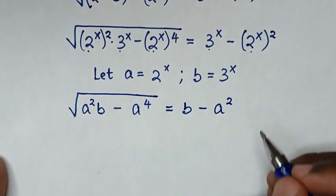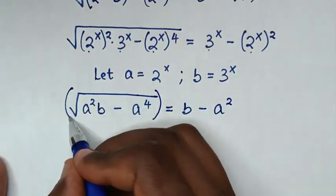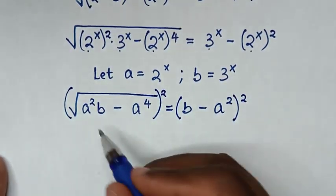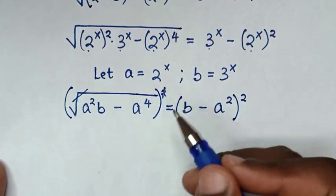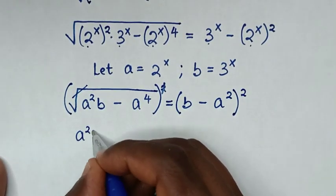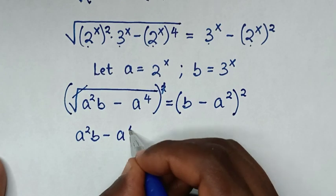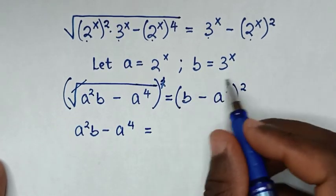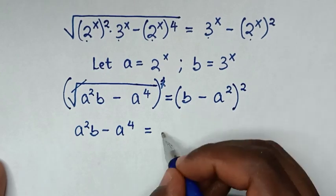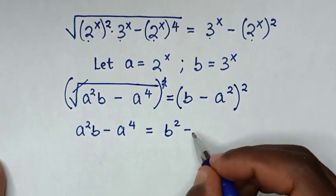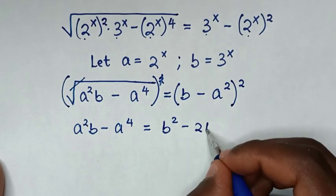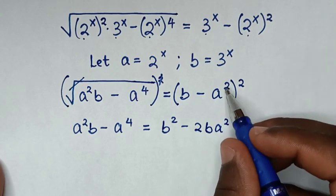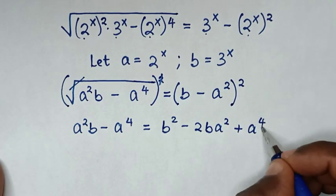In the next step, to remove the square root, we will square both sides. So the square root will cancel with the square, giving us: a²b minus a⁴ equals (b minus a²)². The right side expands to b² minus 2ba² plus a⁴.